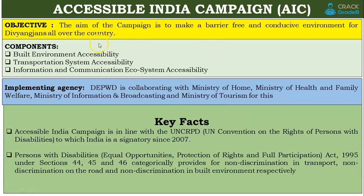The main objective of the Accessible India Campaign is to make a barrier-free and conducive environment for Divyangjan all over the country. The main components are: the government is going to build an accessible environment for Divyangjan people, introduce changes in the transportation system that are user-friendly for Divyangjan, and develop information and communication systems for these people.